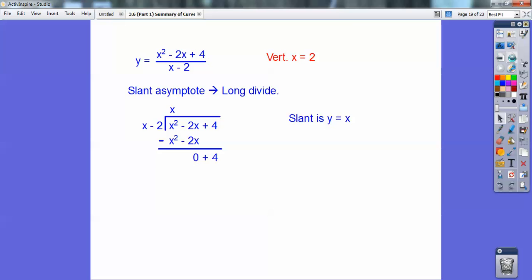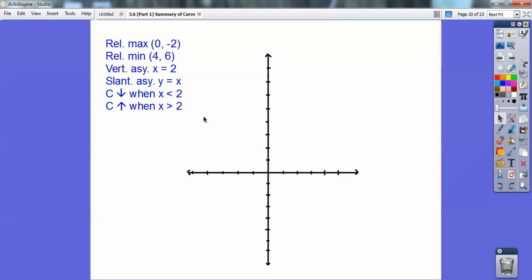So there's enough information right there. There's all my information I need to graph right there. I'm going to graph this slant. I'm going to graph this vertical, x equals 2. So the slant is going to go right up here, y equals x. And then the x equals 2 is going to go right down here. It's going to have a relative max at zero, negative 2 right there. And that's my y-intercept anyways. It's going to have a relative min at 4, 6. So over 4, up 6. Concave up. Concave down. Over here.